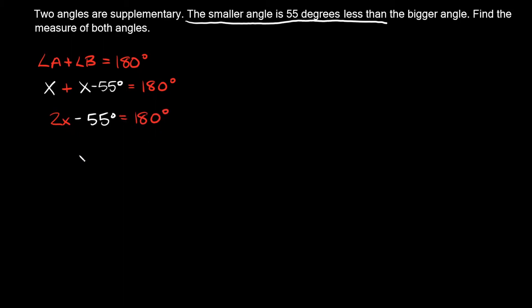So again we're trying to isolate X by itself. So I'm gonna get rid of this minus 55 degrees by adding 55 degrees. And what you do to one side of the equation you do to the other side. So I have to add 55 degrees on this side also.